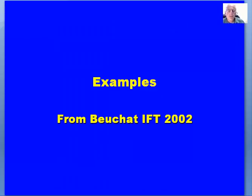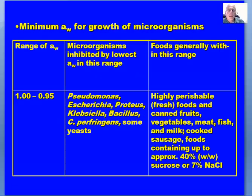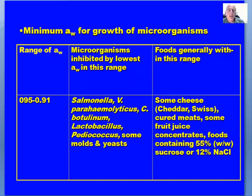Some examples on the next several slides — I'm not going to go into detail — they're from a presentation at IFT in 2002 and give you some insight into water activity levels and which microorganisms may be able to grow at those particular water activity levels. They give you a range of water activity levels, the minimum water activity for growth of microorganisms, the microorganisms inhibited by the lowest water activity in that range, and the foods generally within that range. This is a good reference slide — it gives you insight into which microorganisms may proliferate at a particular water activity and how those can be related to either food spoilage, deterioration, or food safety.